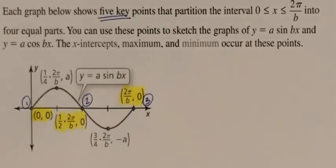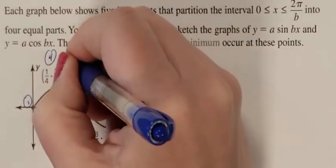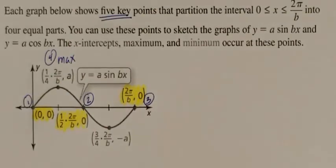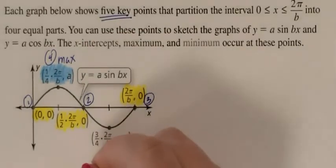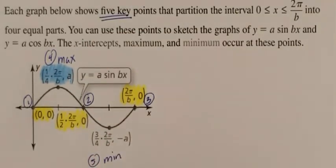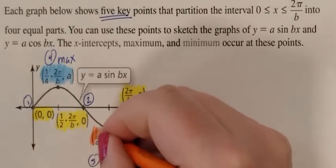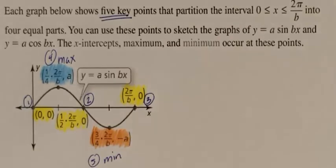You then have key point number 4, which is going to be your max, and your max is this formula. And key point number 5 is this one right here, and it is your min. And that is this formula right here. You need to have all five of these formulas because they're going to tell us how to graph these.